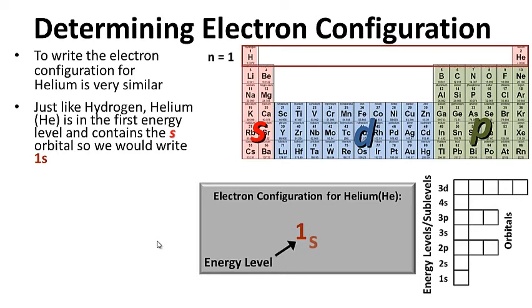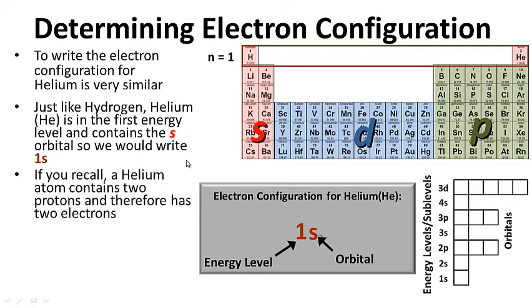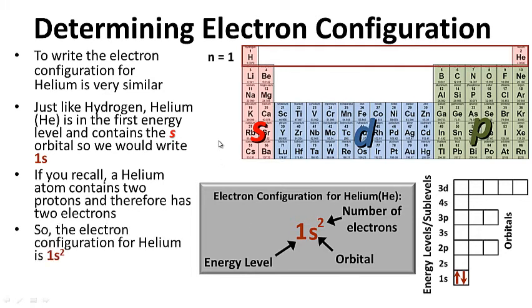Let's try the electron configuration for helium, which is very similar. Just like hydrogen, helium is in the first energy level and contains the S sublevel, so we write 1s. A helium atom contains two protons and therefore has two electrons, shown with two arrows. That's the maximum the S orbital can hold — two electrons. So the electron configuration for helium is 1s².